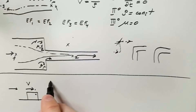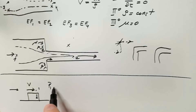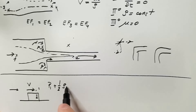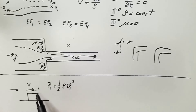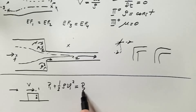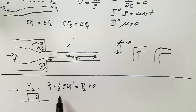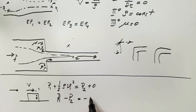They write Bernoulli's equation: P1 + ½ρV1² = P2 + 0, assuming heights of points one and two are approximately the same so the gravitational potential energy term disappears, and that there is no velocity inside the house. So P1 − P2 = −½ρV1².